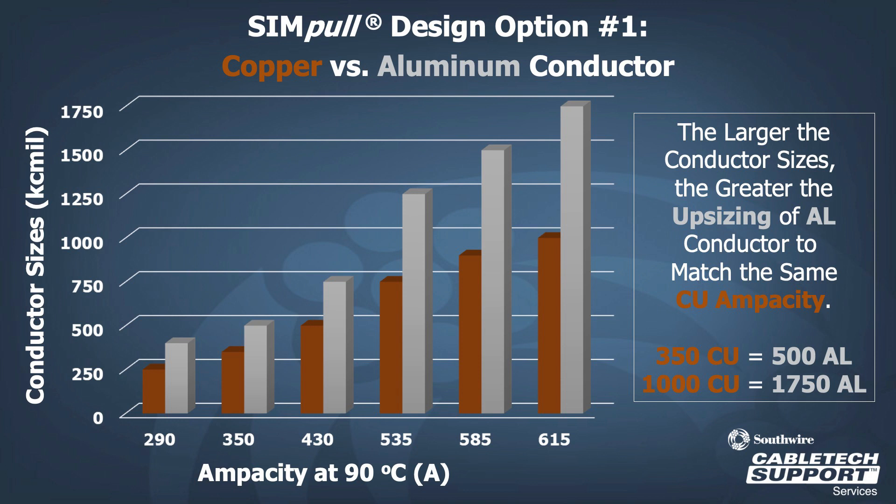However, for even larger conductors such as a 1000 kcmil copper conductor, the aluminum conductor must be upsized three sizes to have the same ampacity.